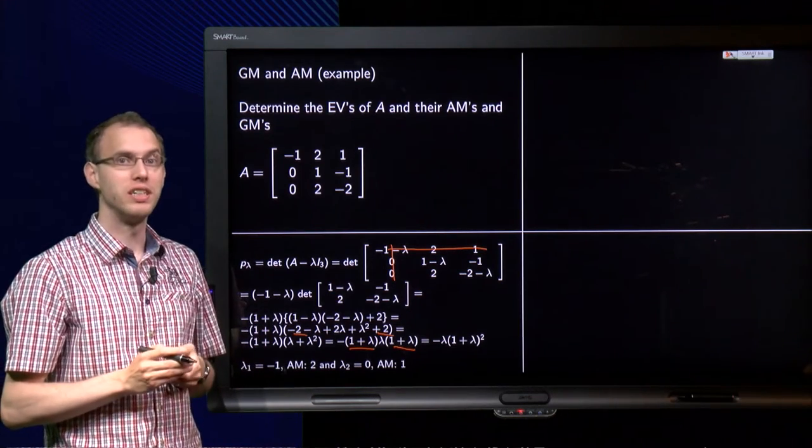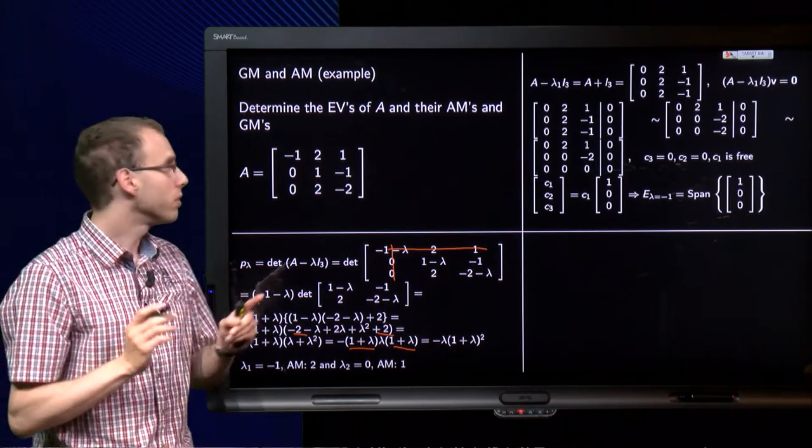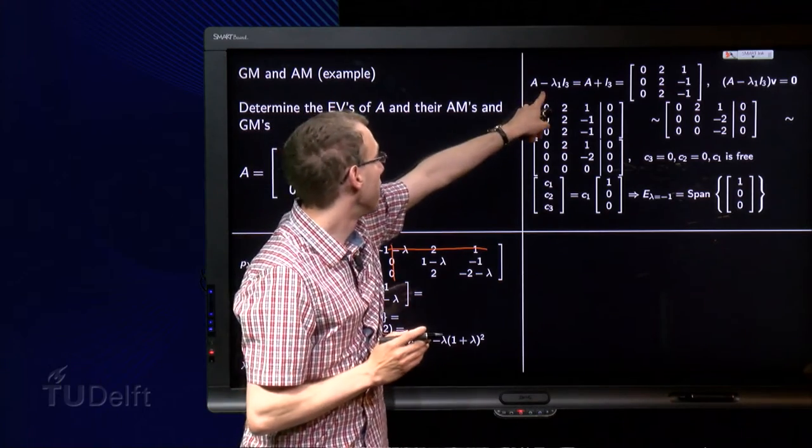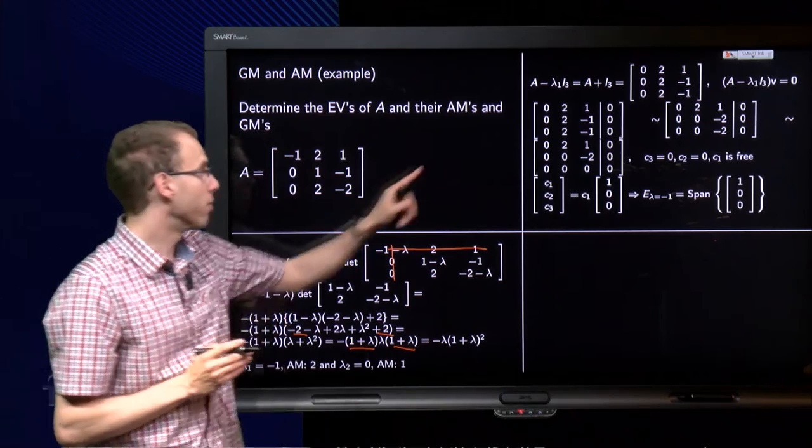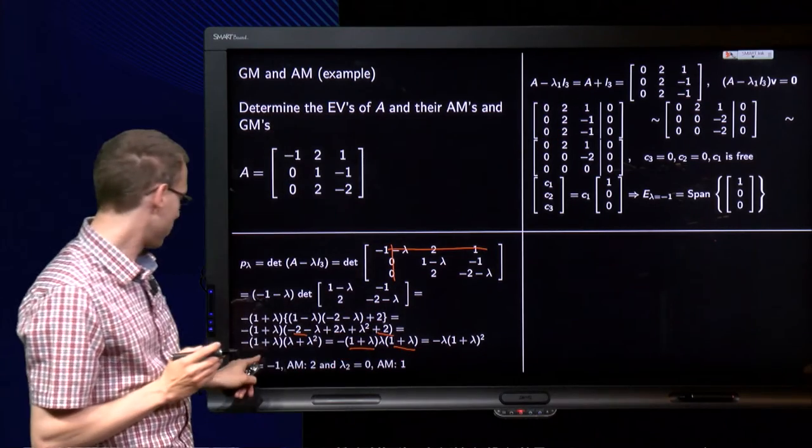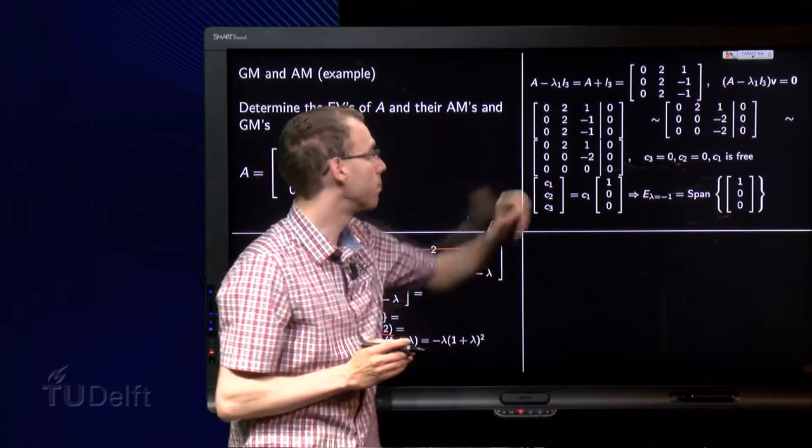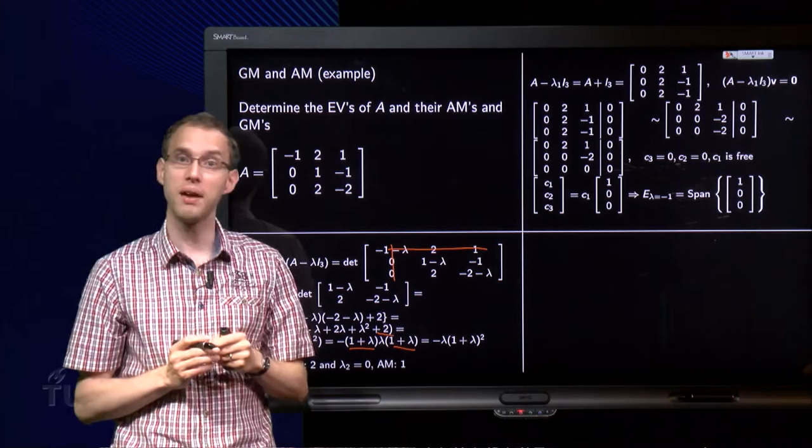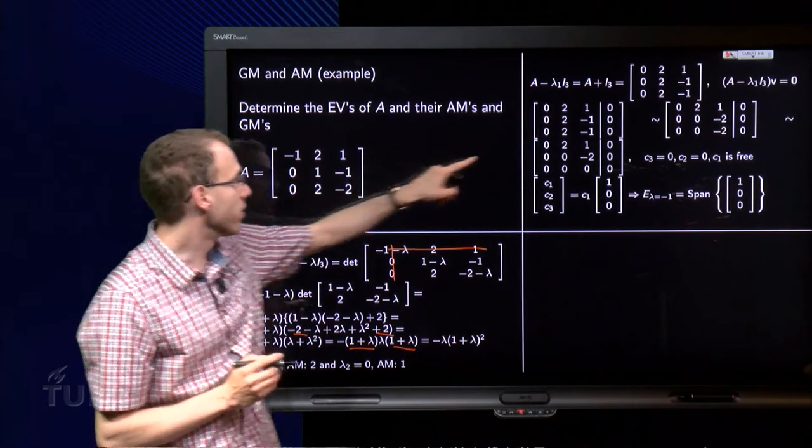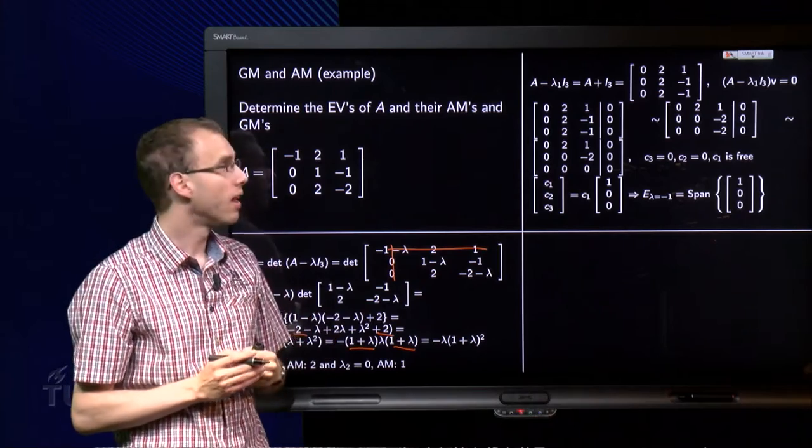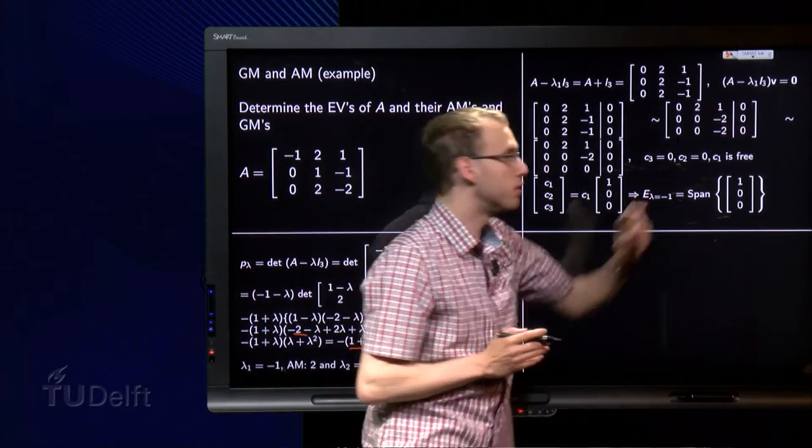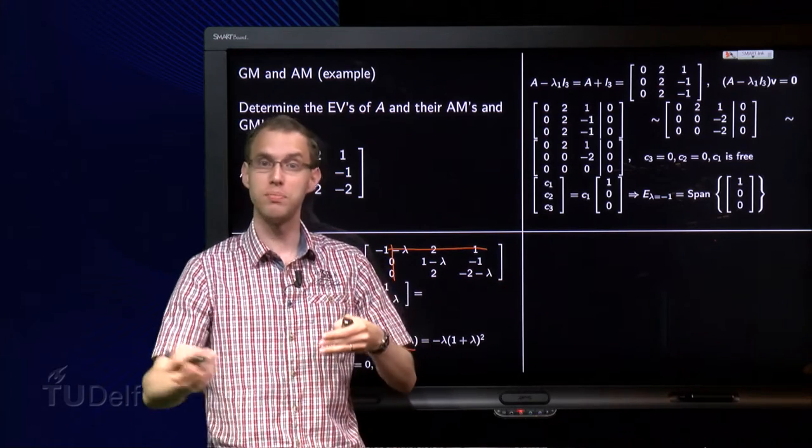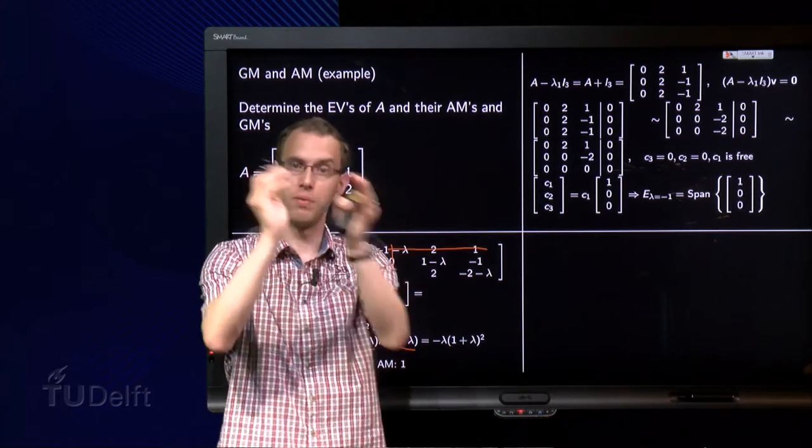Then we continue with the geometric multiplicities. We will do lambda equals minus 1, so we compute A minus lambda 1 times I3. So lambda 1 equals minus 1, so that becomes A plus the identity matrix. So we add the identity matrix to A, so we get a 0, a 2 and a minus 1 here, like that, and those are the same, and then we have to solve this matrix times v equals the zero vector, so we have a problem of the form Ax equals b, so we can form the augmented matrix A with b.